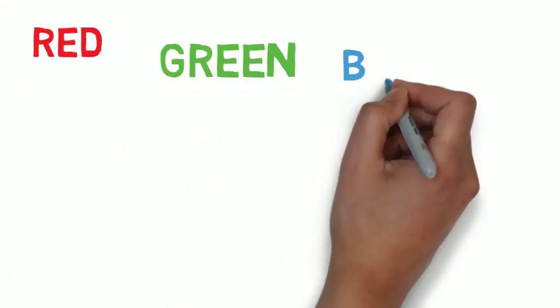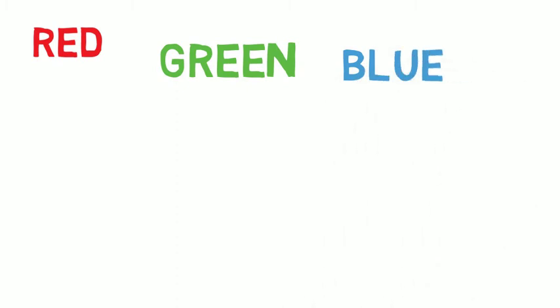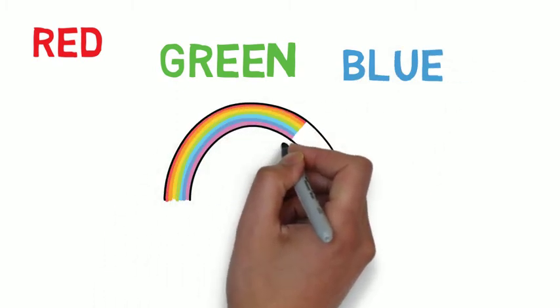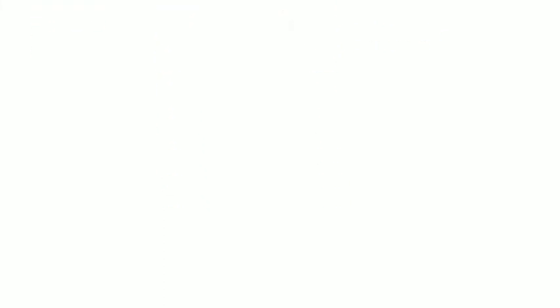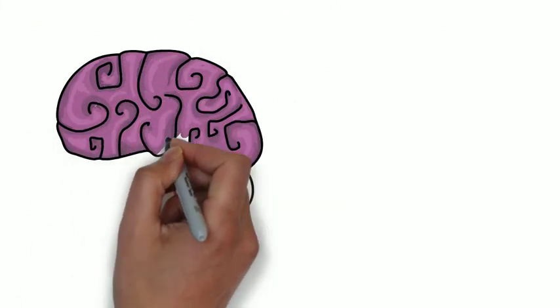We have three types of cones: red, green and blue. Yet, we have the ability to see things in many different colours. The brain does this by using a combination of the three different cone receptors.